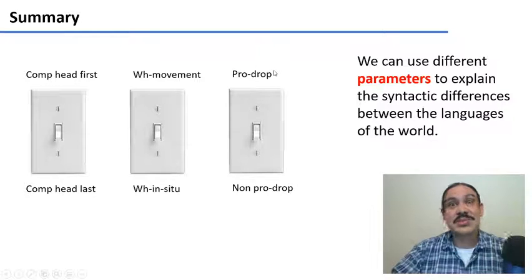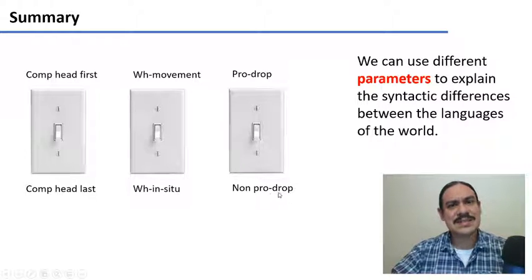So English is non-pro-drop and Spanish is pro-drop. Other pro-drop languages include Japanese. Japanese is pro-drop. And on the other hand, other non-pro-drop languages like English are French and German, where you always need subjects.